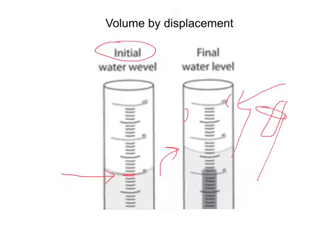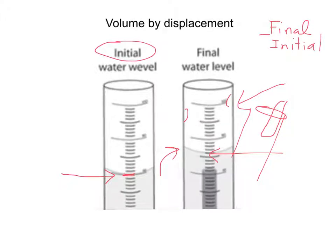Then you're going to get the new water level — the final water level reading from the bottom of the meniscus — and all you need to do is subtract the final level minus the initial level. When students first start using this method, the first mistake they make is they don't measure their initial water level. They get some water, put their object in, and then realize they forgot to measure the water before adding the object. What you want is the difference between the two — that gives you your volume.